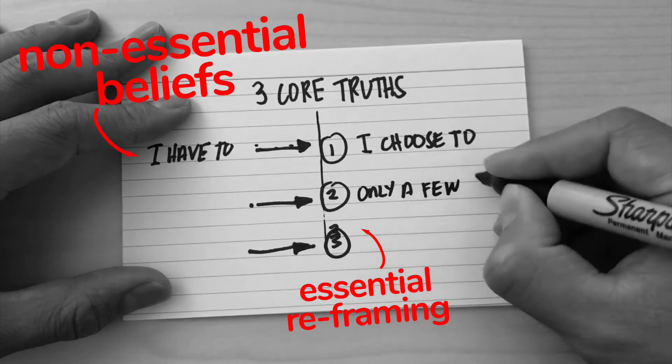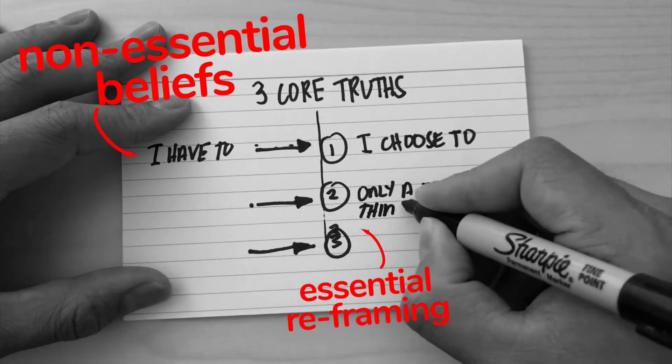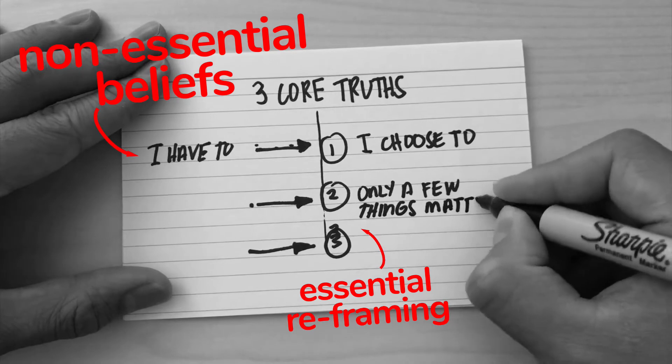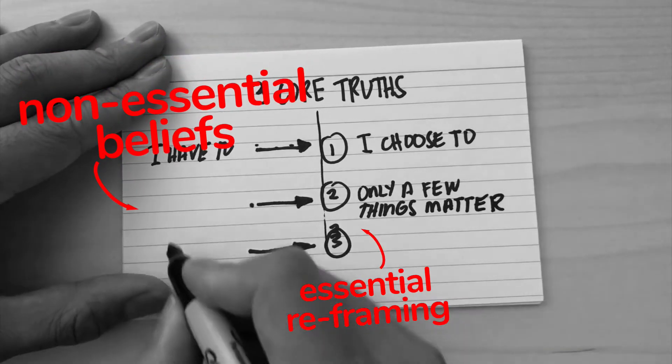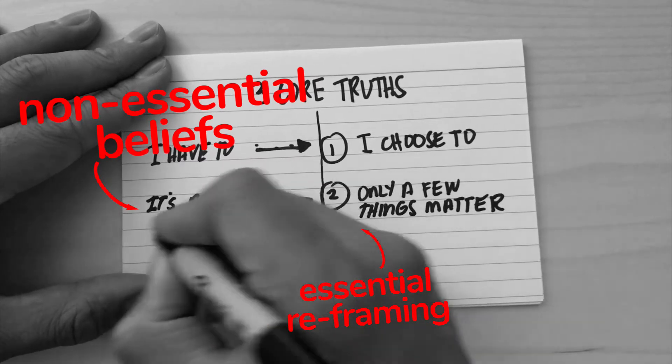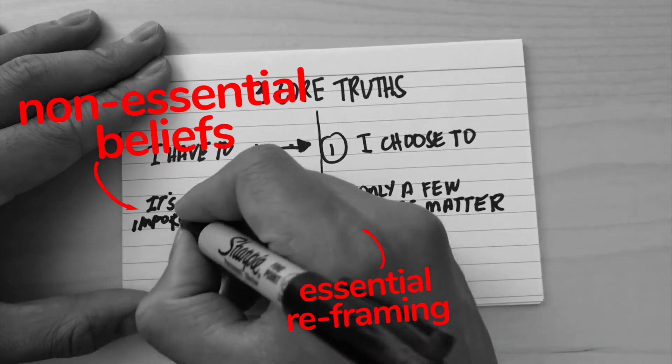The next core truth is 'only a few things matter.' This aligns with a thing that a lot of people can start to think, which is that it's all important. When you're trying to pursue a bunch of different projects, there's good reasons for each individual one.